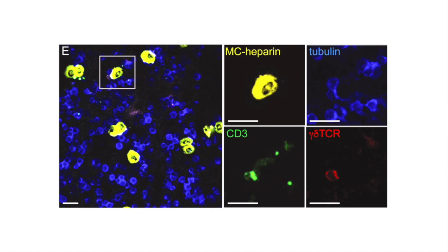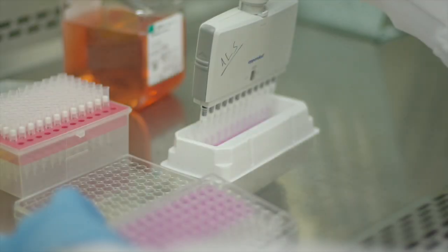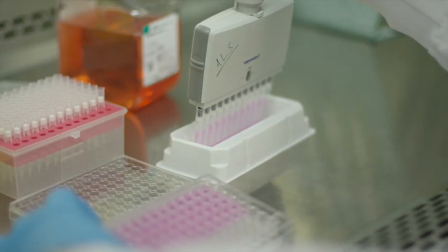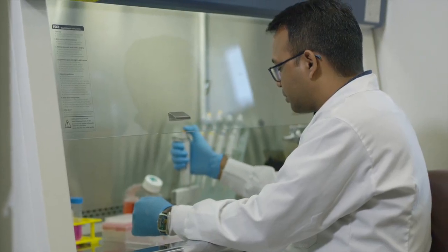Looking closely, we could see that there was a strong polarization of the T-cell receptor towards the mast cell. This suggested to us that mast cells are activating Gamma-Delta T-cells in a way that is through the T-cell receptor, which is similar to activation by antigen presentation. The experiments we did to show the mechanism involved a series of co-culture experiments where we observed that activation was contact-dependent, and it was occurring through the Gamma-Delta T-CR.